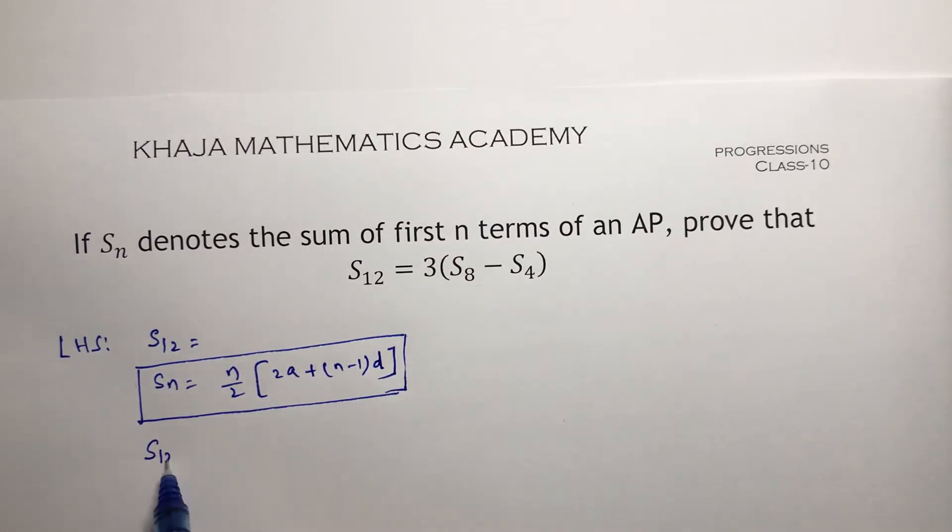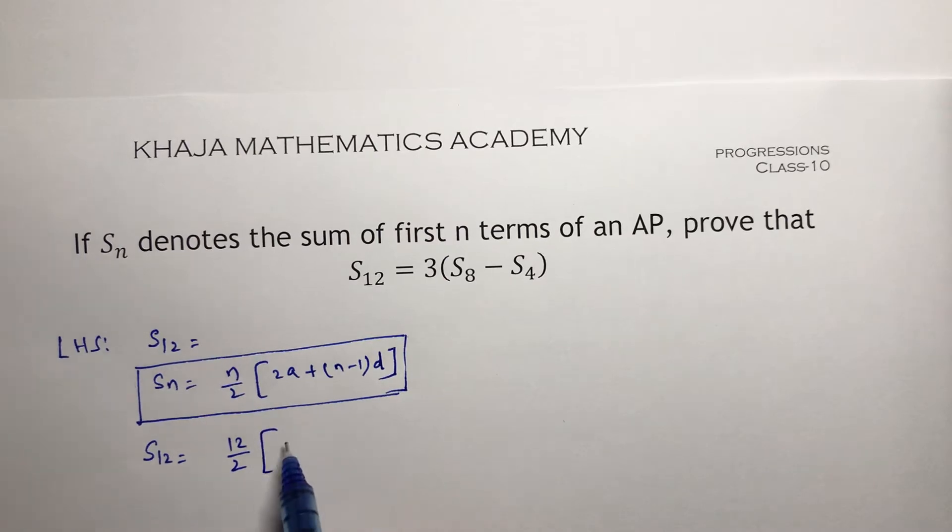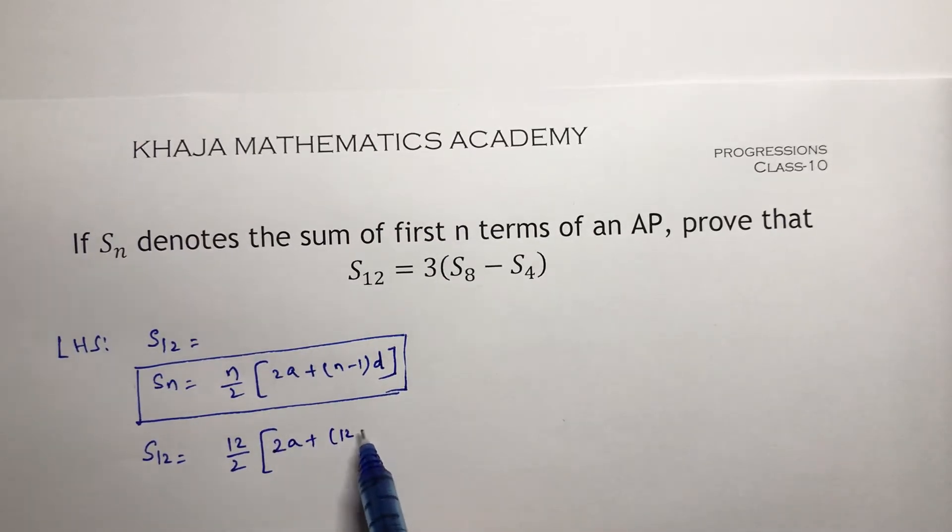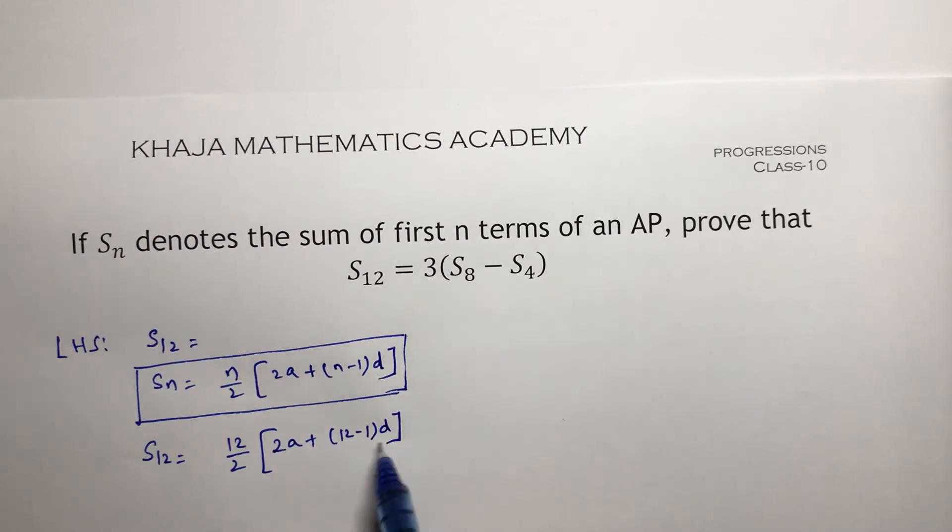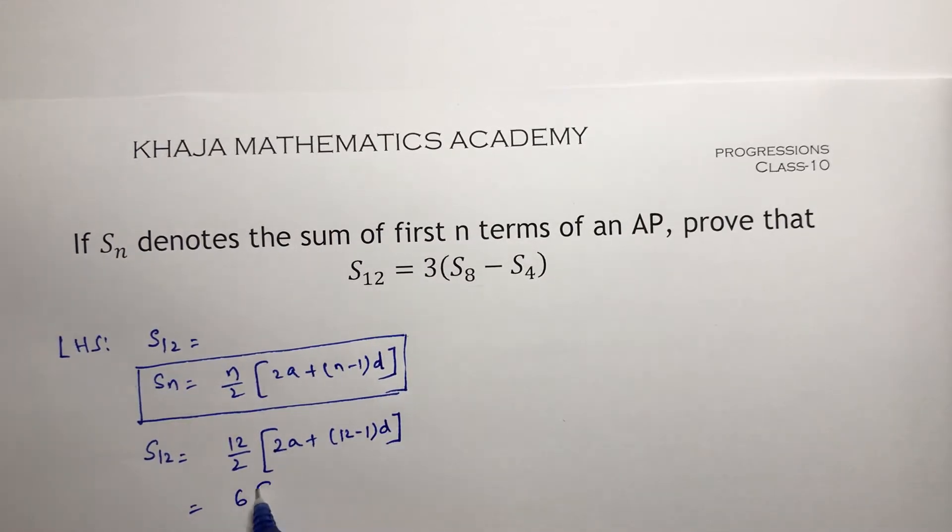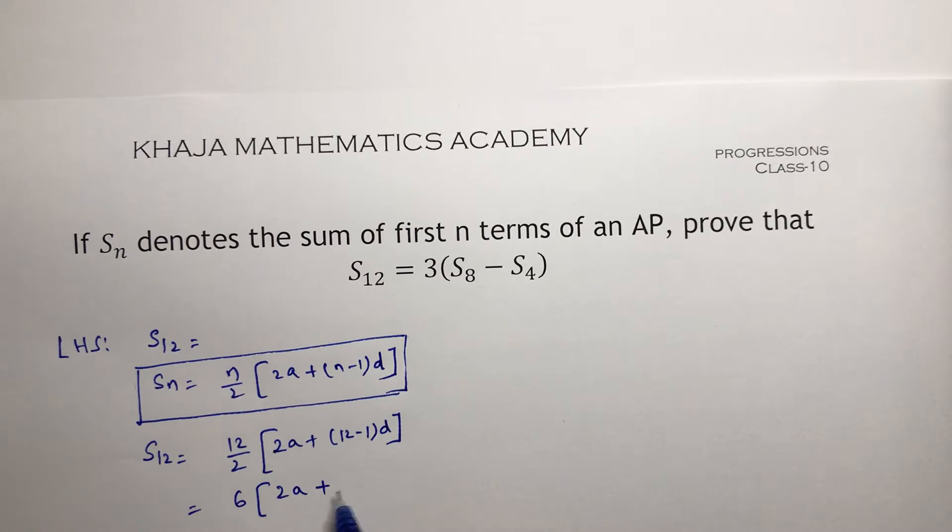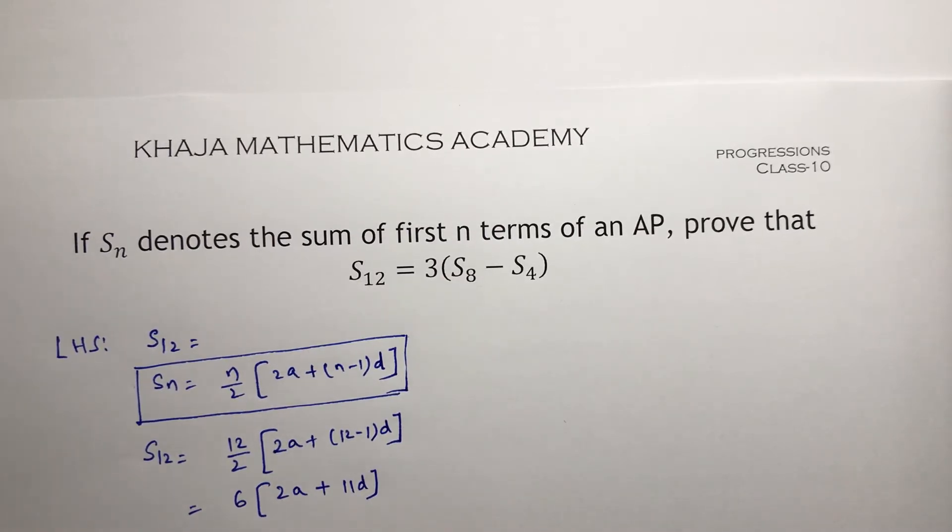So if I will calculate S12, it's 12 by 2 into 2A plus 12 minus 1 into D. 12 by 2 is 6, so 6 into 2A plus 11D.